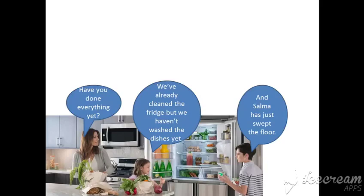Here we see a mother talking to her two children. She says: 'Have you done everything yet?' — 'yet' is a keyword for the present perfect. The girl answers: 'We have already cleaned the fridge, but we haven't washed the dishes yet.' She uses 'already' and 'yet' — both keywords for the present perfect. The boy adds: 'Selma has just swept the floor.' — 'just' is also a keyword for the present perfect.